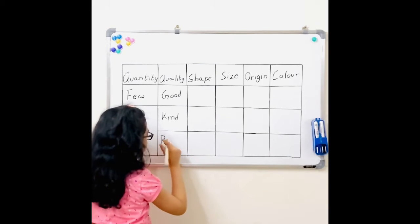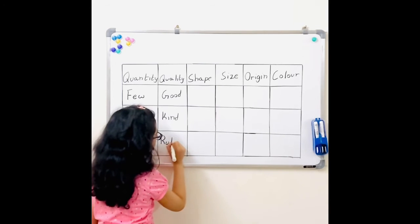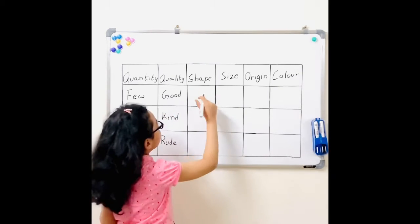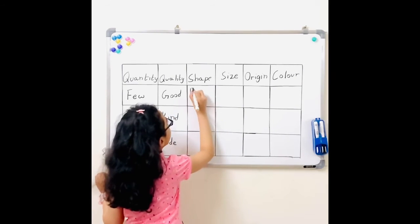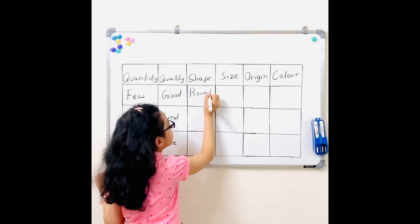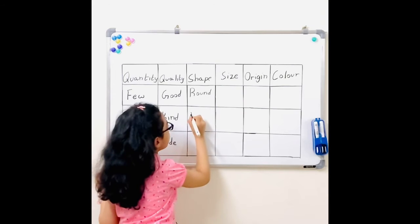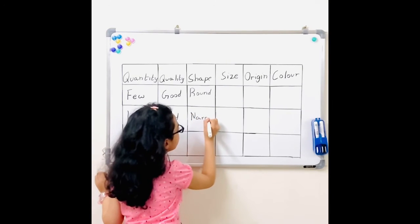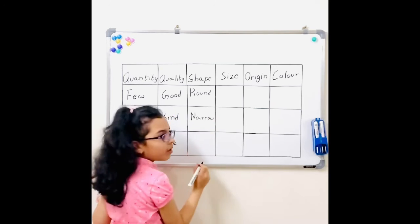Not a noun here. Now coming to the shape. You could write round, narrow, or hollow.